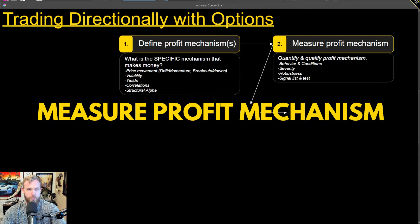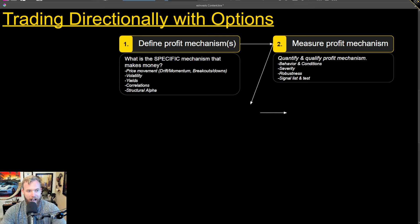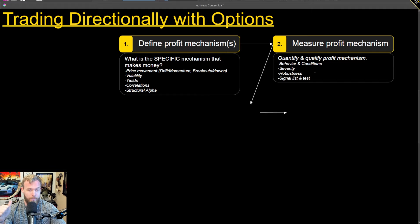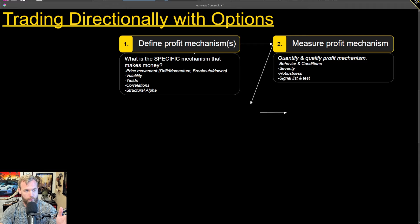Once we understand the profit mechanisms, we need to measure them and understand how they work — the ins and outs of when it happens. I have a prime example looking at five different meme stocks: GameStop, Costco, Siri, SoFi, and Lunar. We need to not just understand the profit mechanism, but measure it and then figure out corresponding signals that help us find it.